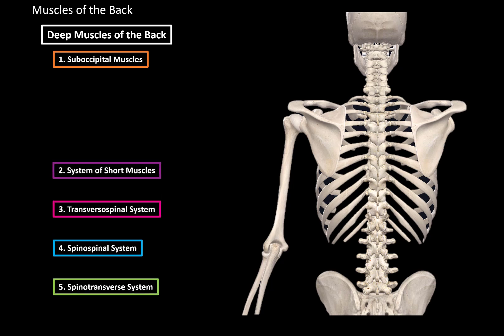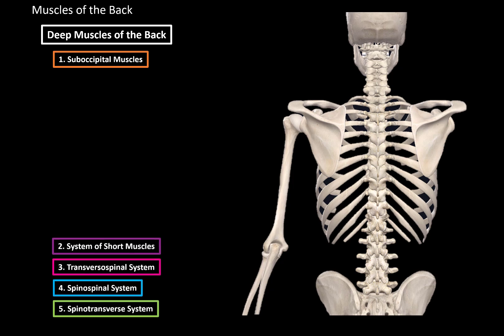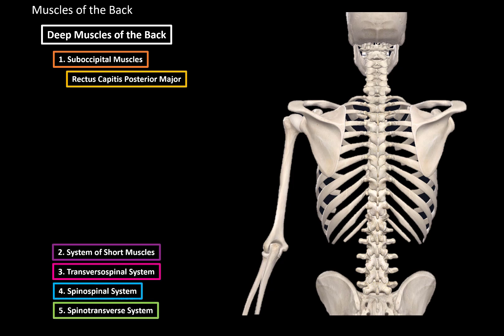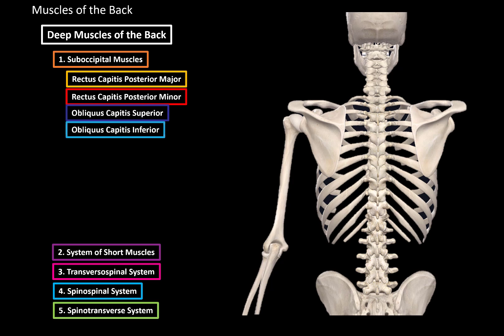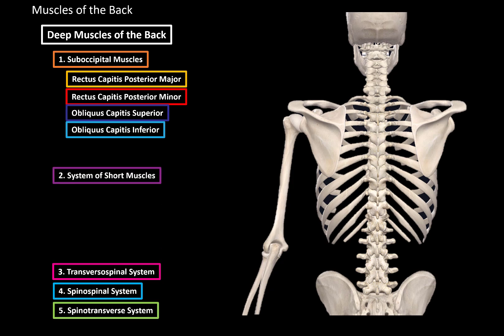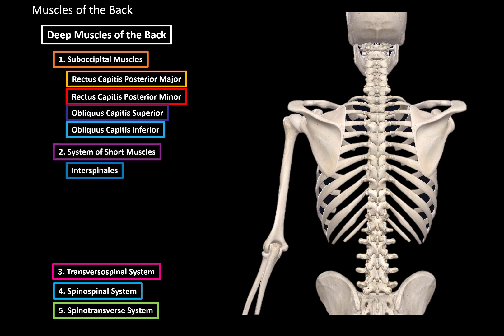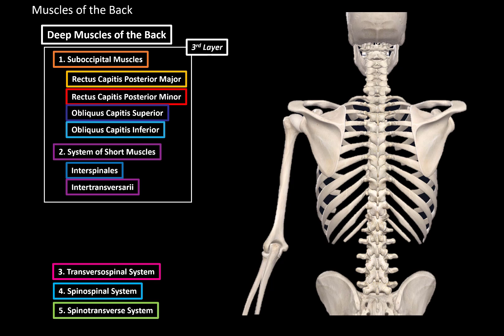The suboccipital muscles consist of four muscles: the rectus capitis posterior major and minor, and the obliquus capitis superior and inferior. The system of short muscles consist of the interspinalis and intertransversarii muscles. These are considered the third layer of deep back muscles, meaning they're the deepest layer closest to the bone.